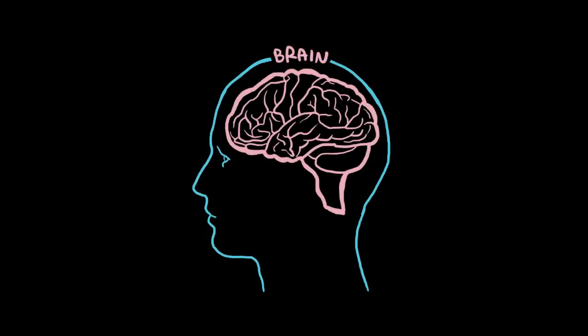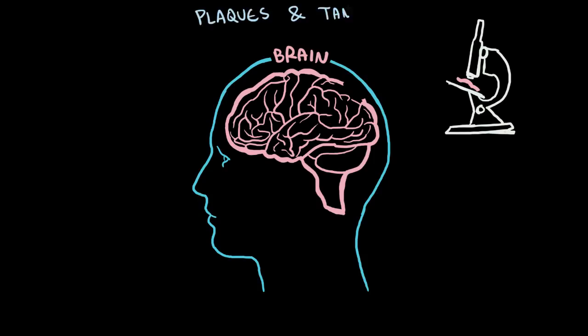If we take a look at the brain tissue that's been affected by Alzheimer's disease under a microscope, there's almost always two common factors that we'll see, and these are called plaques and tangles.